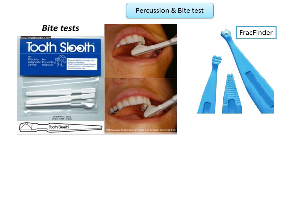If periradicular periodontitis is present, the tooth will respond with pain to percussion and biting tests regardless of where the pressure is applied to the coronal part of the tooth. Whereas a cracked tooth or fractured cusp will typically elicit pain only when the percussion or bite test is applied in a certain direction to one cusp or section of the tooth.